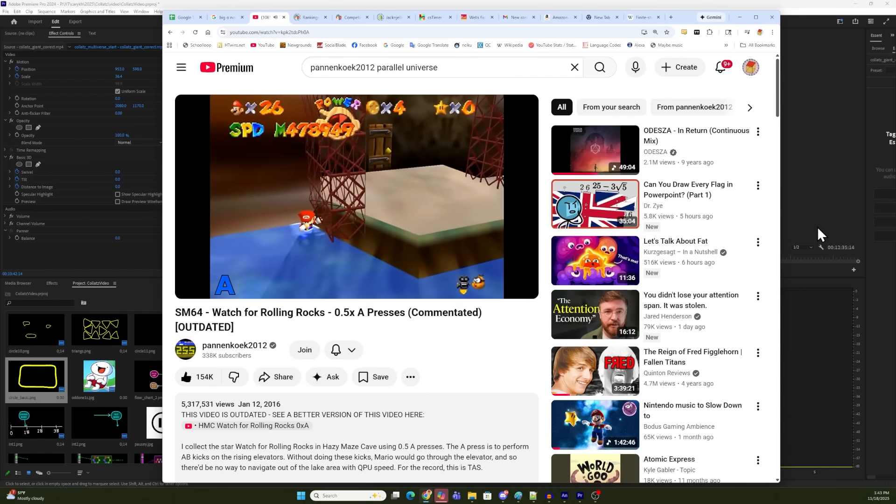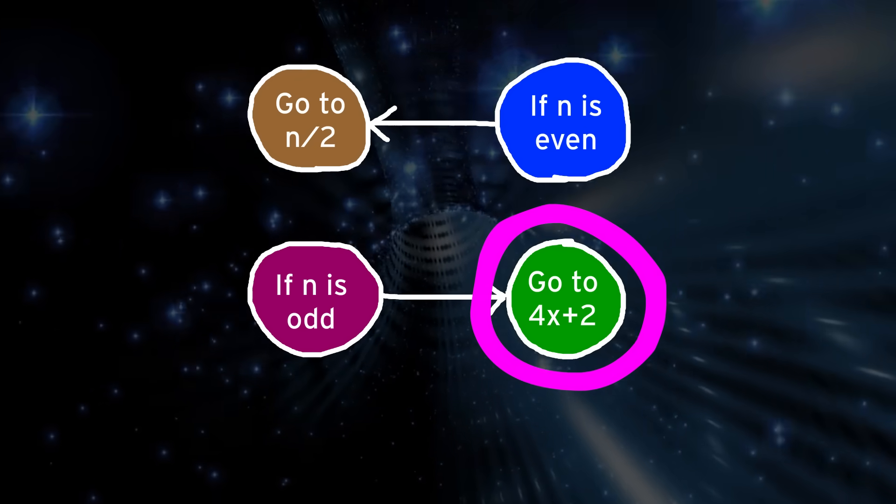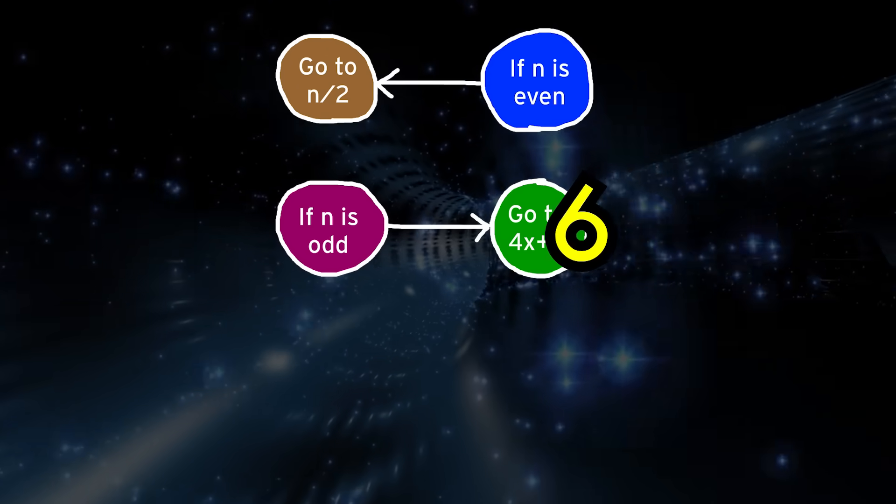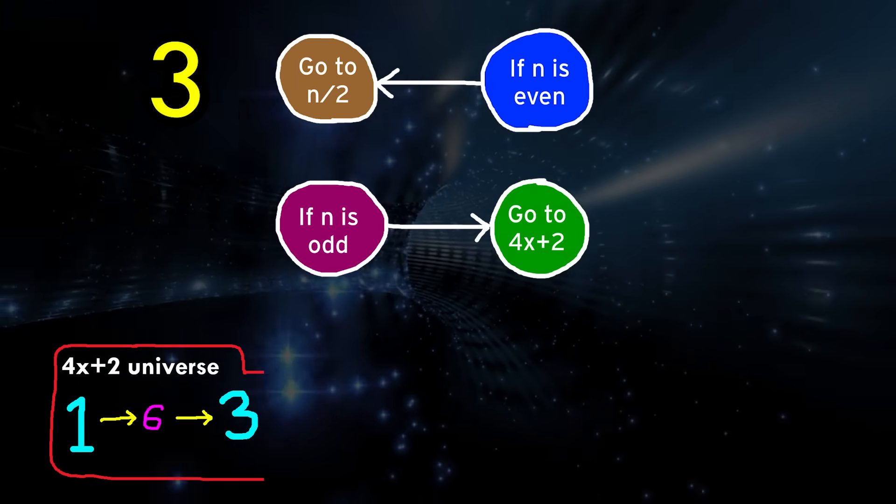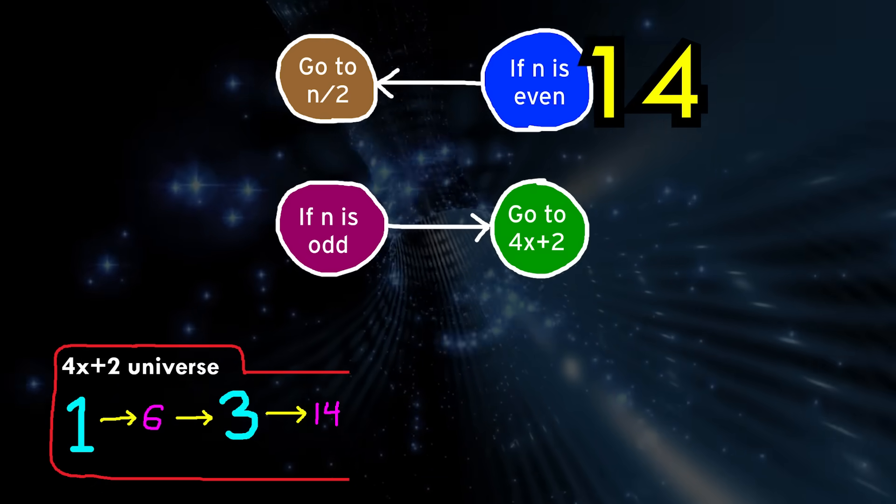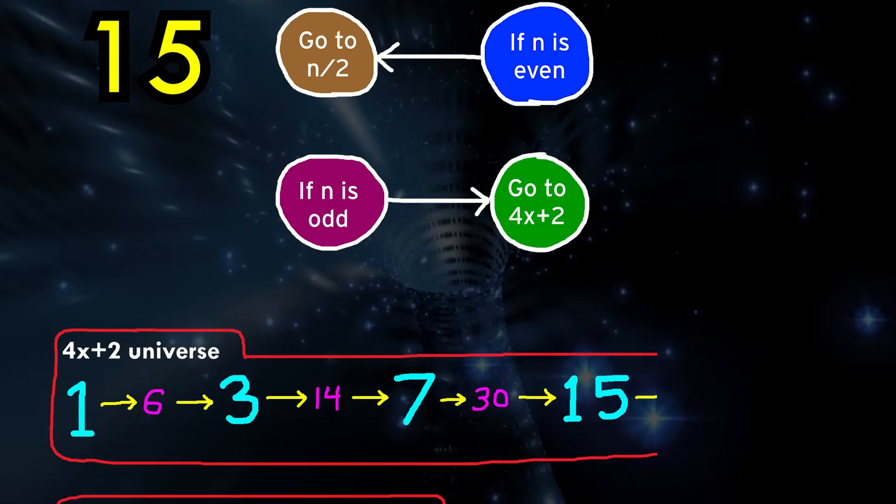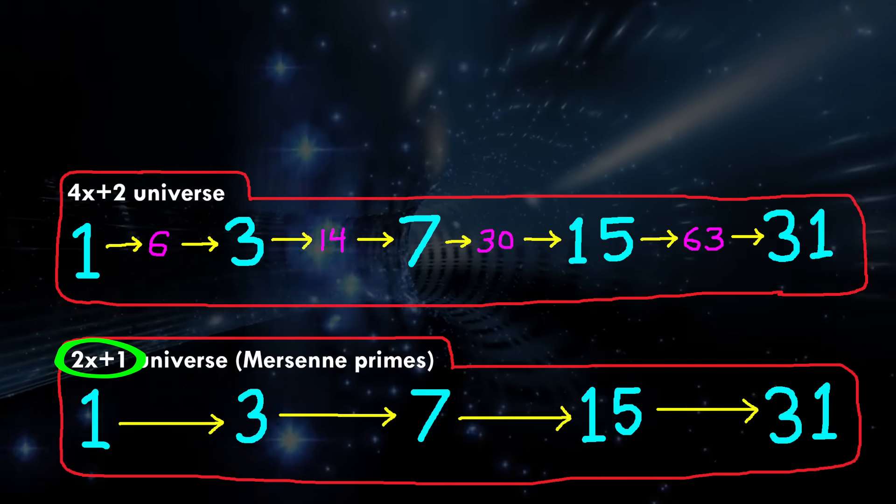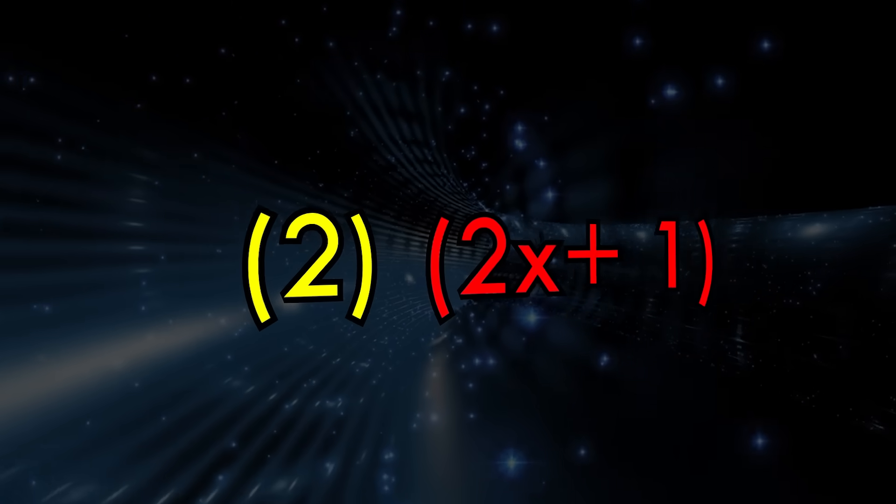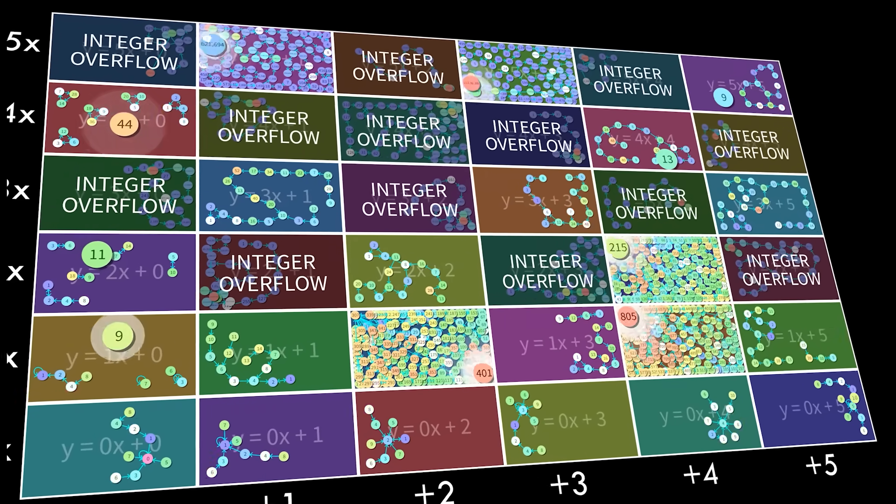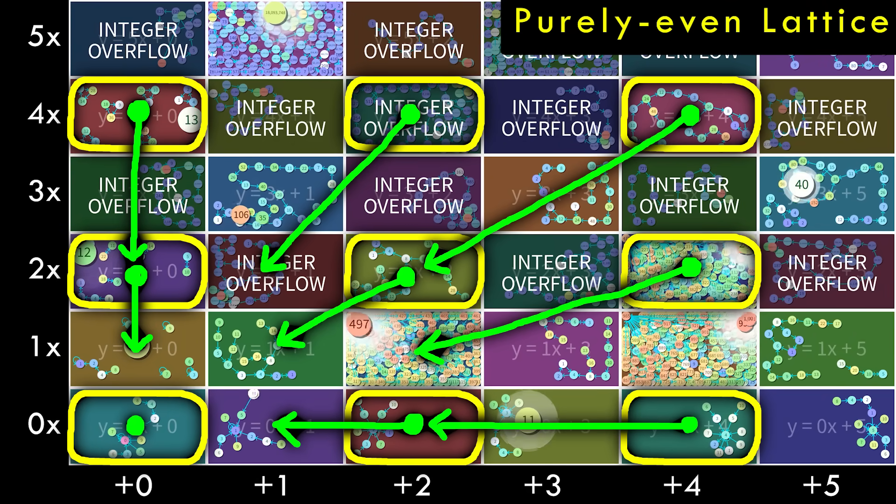Let's zoom into the 4x plus 2 universe. If we followed that rule set of y equals 4x plus 2, what happens? 1 goes to 4 plus 2 equals 6, which then falls back to 3. Notice that this expression will always return an even number. So then 3 goes up to 14, which reduces down to 7. And then 7 goes up to 30, which reduces down to 15. Hold on a second, this is just the Mersenne prime universe again, 2x plus 1, but with more steps. Another way to think of it is that we can factor the 2 out of 4x plus 2 to reveal who we're really working with. In fact, all universes that fall on the purely even lattice immediately reduce to their divided by 2 counterparts.